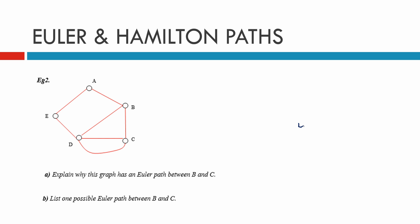Here's another example. It says explain why this graph has an Euler path between B and C. Let's label these with how many degrees each one has. A has two, B has two, D has one, two, three, four. C has one, two, three, and E has one, two, three. So all the vertices except B and C are even. We have two odd vertices here. Therefore, an Euler path exists.